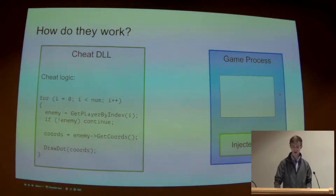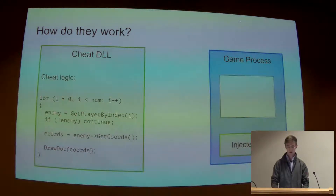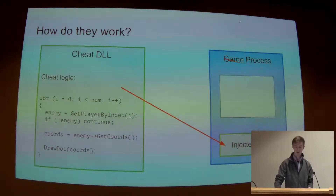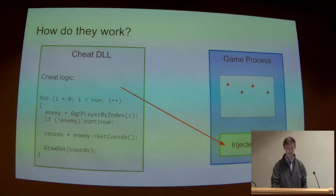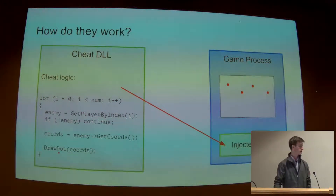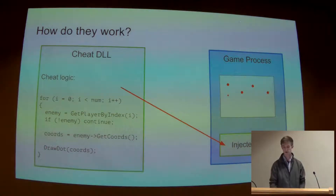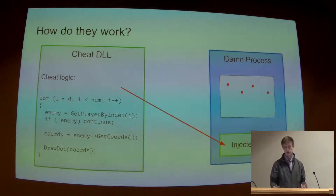How does a cheat work? Typical cheat architecture — not all cheats are made this way, but something you see a lot — is the cheat developer will write a DLL that gets injected into the game process, in this case Battlefield 2. From there, you have cheat logic. It might look something like pseudo code where it says: get each player, if they're an enemy, get their coordinates. This hypothetical hack is an extrasensory perception hack that shows you where enemy players are on your map — normally you can't see where your enemies are, but this cheat reveals their locations.